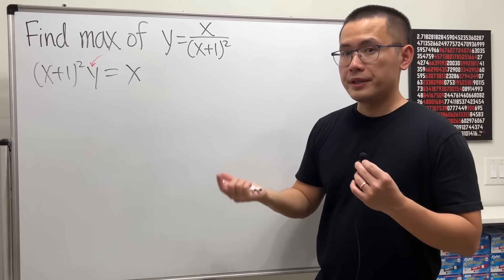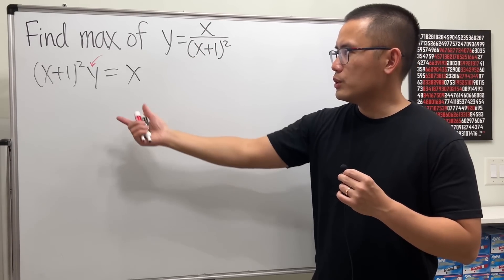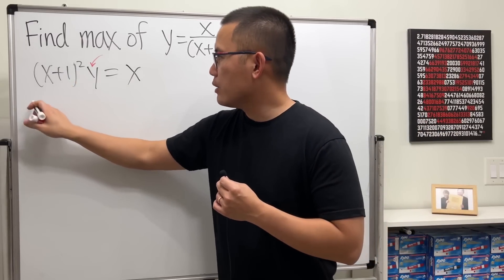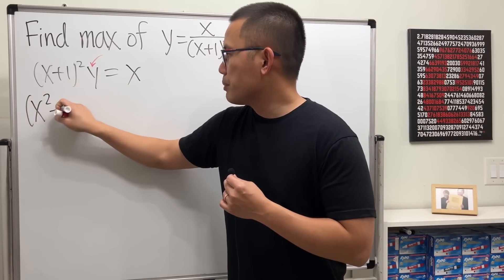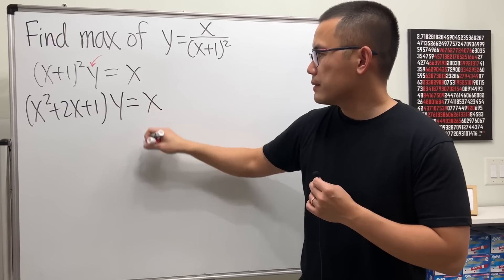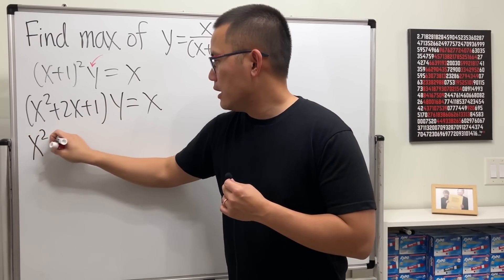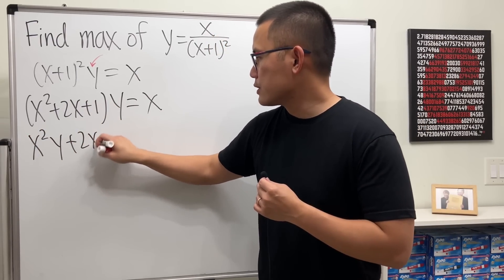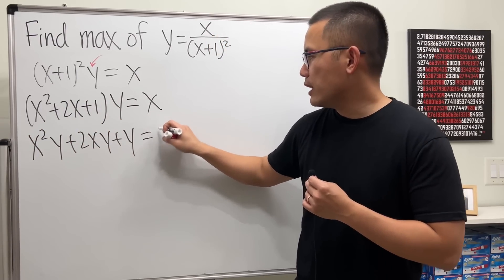So how can we make that happen? Why don't we just do the typical algebra thing? Multiply this out. We get x² + 2x + 1 and then times y, and that's equal to x. Distribute the y. x²y + 2xy + y is equal to x.